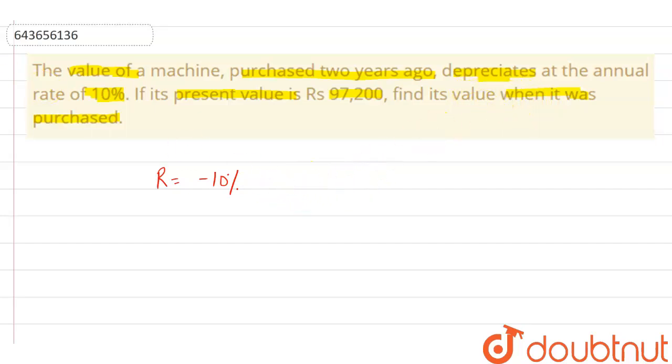We know the formula: A = P(1 + R/100)^t, where t is the time period, R is the rate of interest, P is the principal amount, and A is the amount.